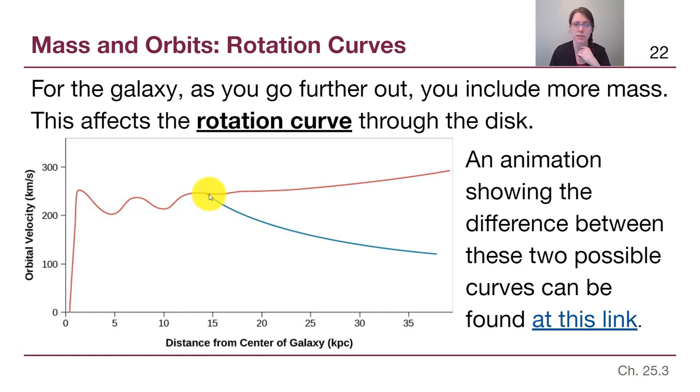But at about this distance here, about 14 or 15 kiloparsecs, we now get to the edge of the disk, the disk of material that has all of the gas and dust and most of the stars.